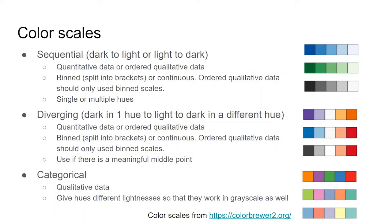Divergent color scales — color scales that start off dark in one hue, then lighten to white, then darken into a different hue — follow the same best practices as sequential color scales in terms of the type of data they should portray and when to use a binned scale. Divergent color scales are less intuitive than sequential color scales, so when should you use one? If you have a meaningful middle point and want to highlight it, a divergent color scale will help convey your message — for example, zero for temperature above and below freezing in Celsius, or an average, median, or agreed threshold. The last of the color scales is the categorical color scale, which should be used for qualitative data, and giving each hue a different lightness will also ensure that they can work in grayscale as well.